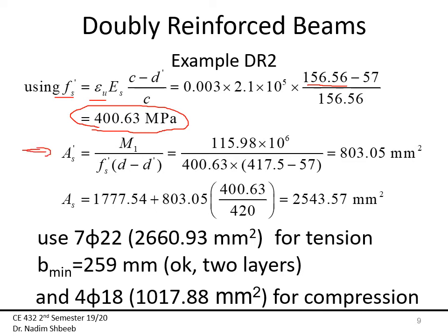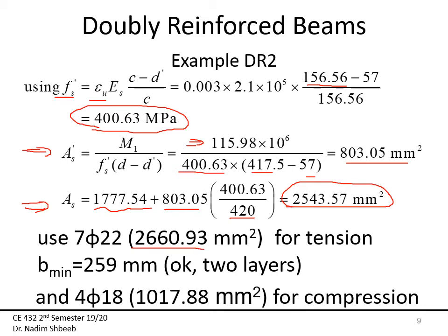We can now calculate A's = Mn2 / (f's · (d − d')) = 116 kN·m / (400.63 · (417 − 57)) = 803.5 mm². The total tension steel area is As_total = As1 + A's · (f's/Fy). For tension, we use 7φ22, giving As = 2660 mm² (minimum width B = 259 mm — two layers confirmed). For compression, we use 4φ18, giving A's = 1017.8 mm².